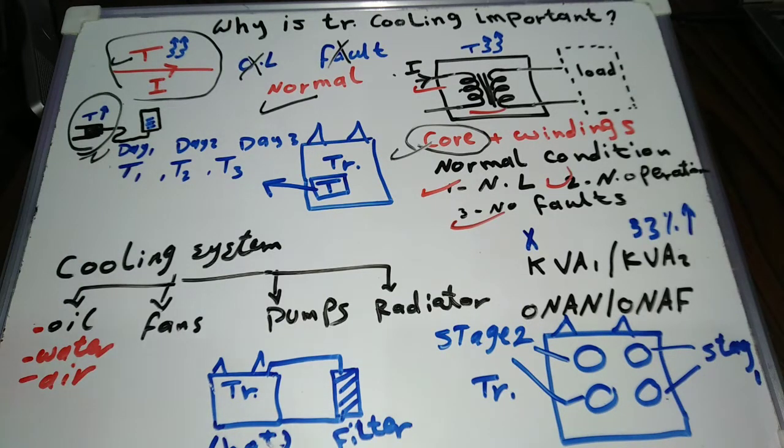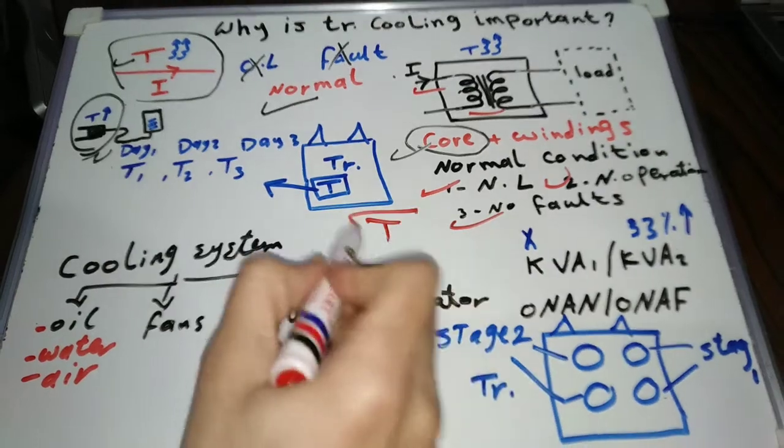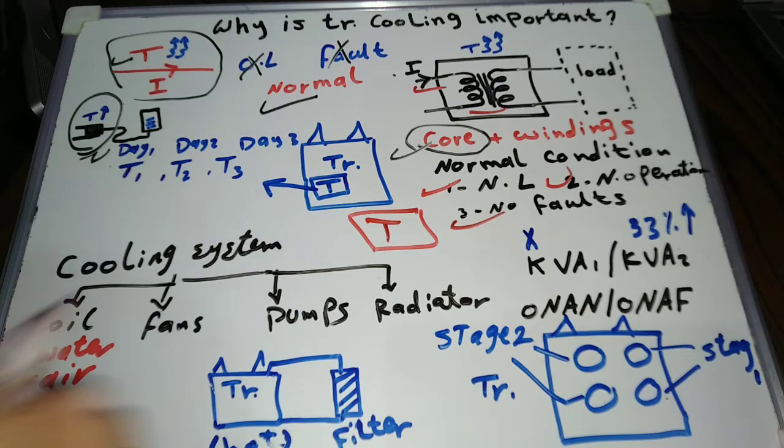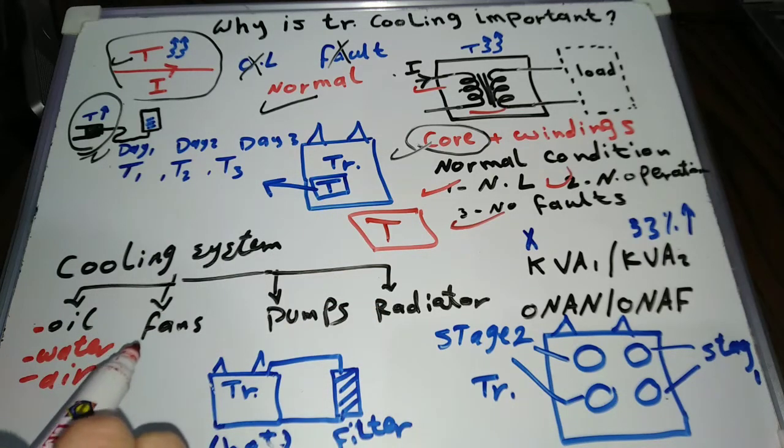Don't worry, this heat is not harmful if, and only if, we keep it in the allowable limits. The question now is, what are these limits? And how do we control the temperature rise of the transformer?